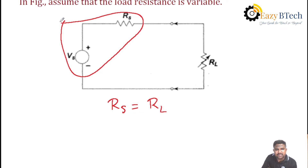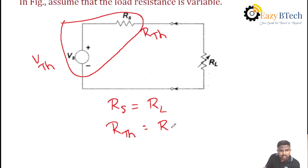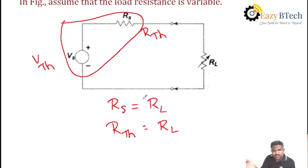In the given circuit, at the load resistance, you must find out Vth as well as Rth. This source voltage is Thevenin's voltage and this source resistance is Thevenin's resistance — also represented as R-Thevenin. R-Thevenin is equal to load resistance. This is the condition at which maximum power can be transferred from source to load side.